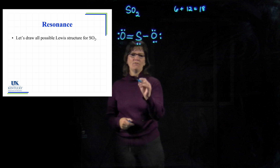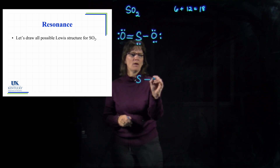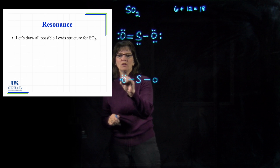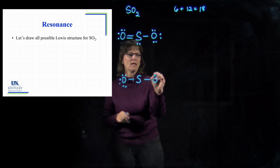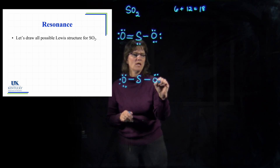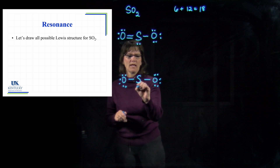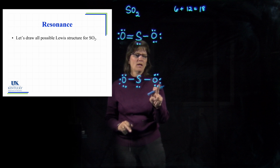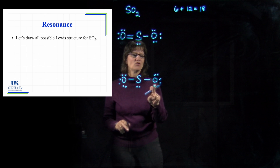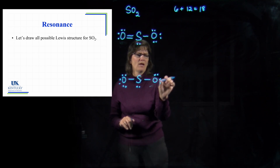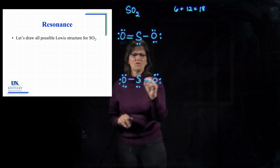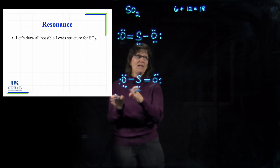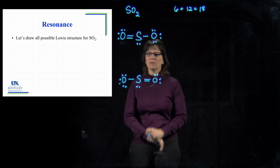I could have done the same thing, but instead of shifting from the left-hand oxygen, I could shift from the right-hand oxygen. Here's where we started. I take two electrons off the right oxygen and shift them in toward sulfur. Now everybody has eight electrons and I've used all 18.